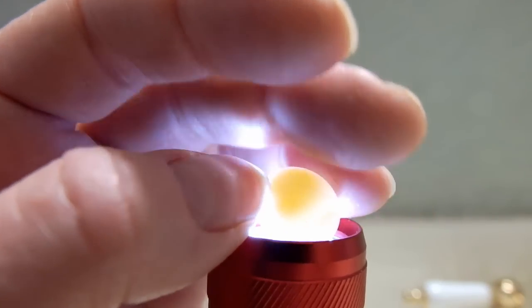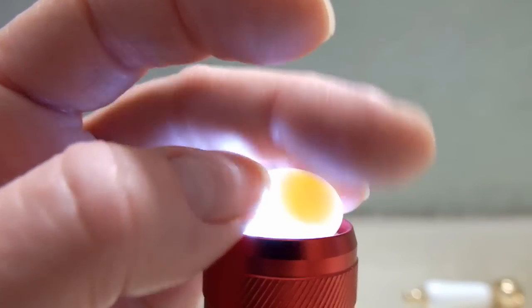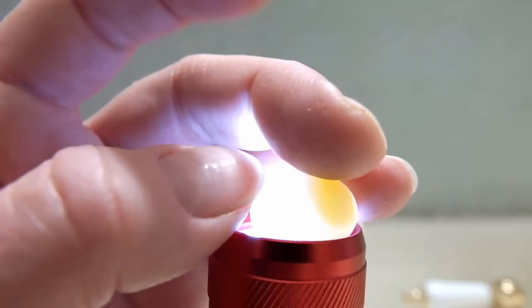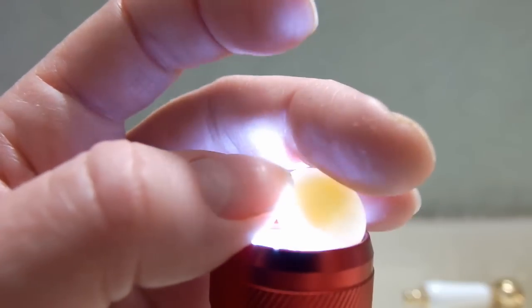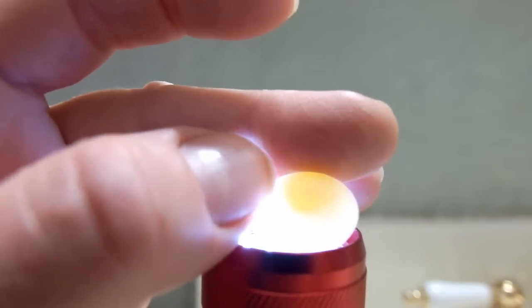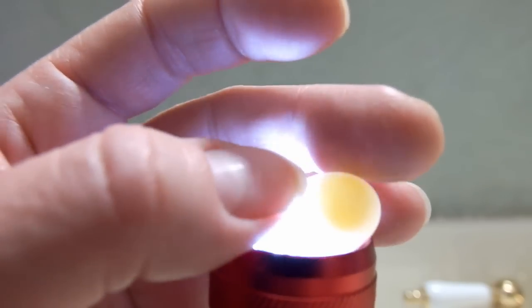That's an infertile egg. In fertile eggs you'll see the veins and you'll even see the bird, you'll see the heartbeat. I have some fertile eggs but I'm not going to do this to them because I don't want to disturb them and hurt the eggs and disturb the mother.